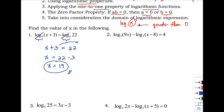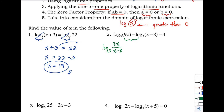Number two: logarithm of 9x with base 3 minus the logarithm of (x − 8) with base 3 equals 4. We have two logarithmic expressions with the same base, and since there is subtraction, we can apply the quotient law. This rewrites as logarithm of (9x / (x − 8)) with base 3 equals 4.